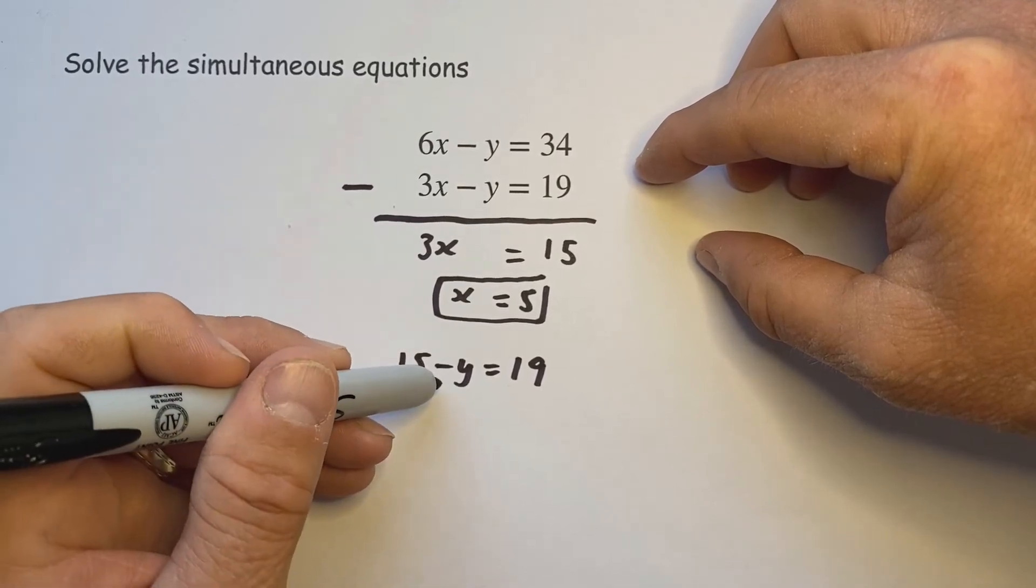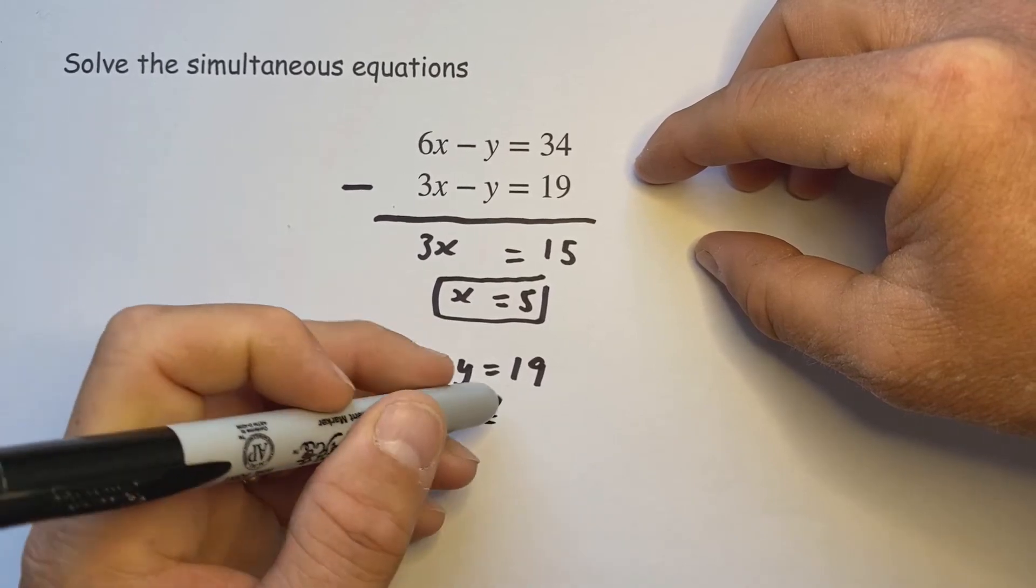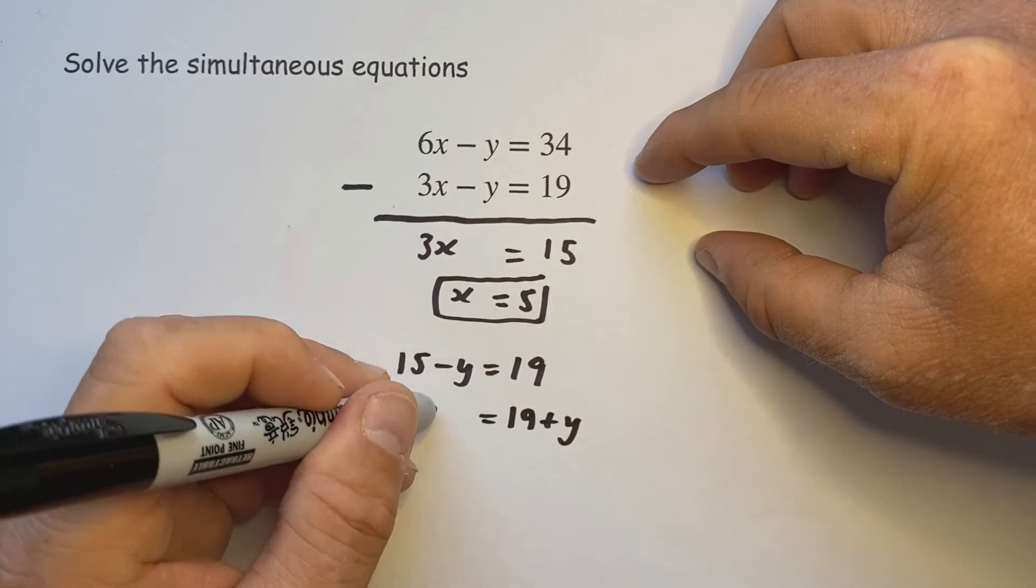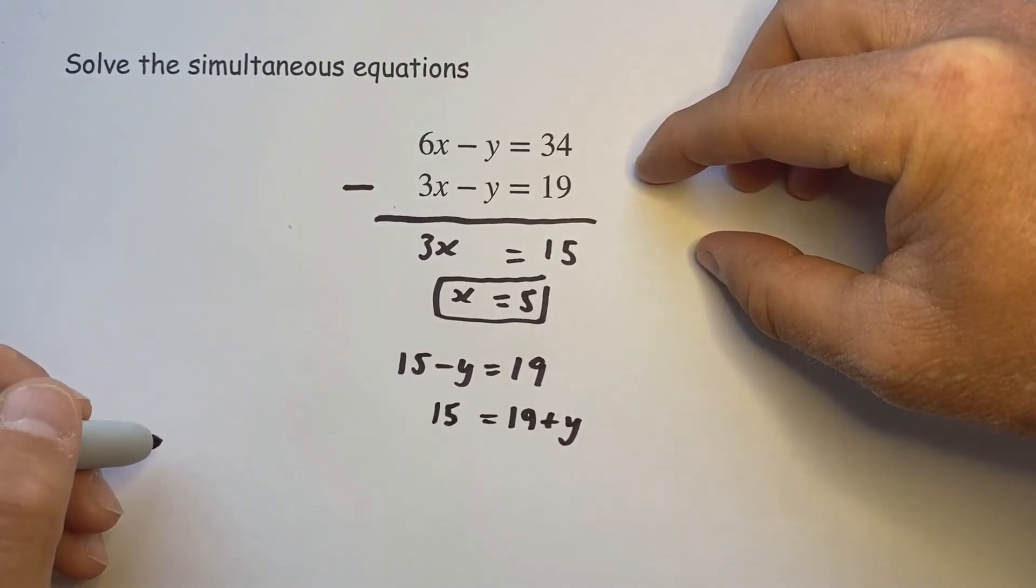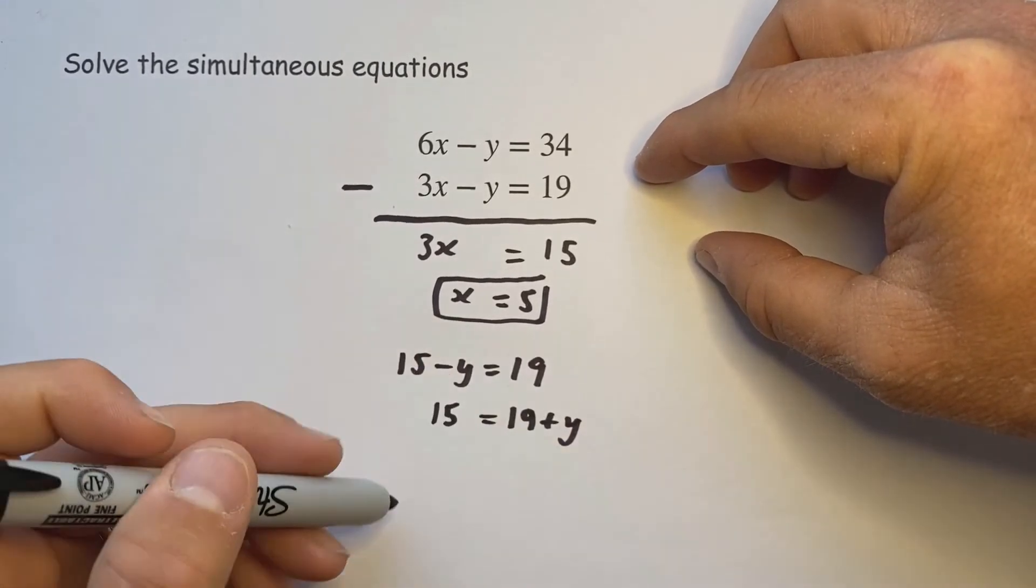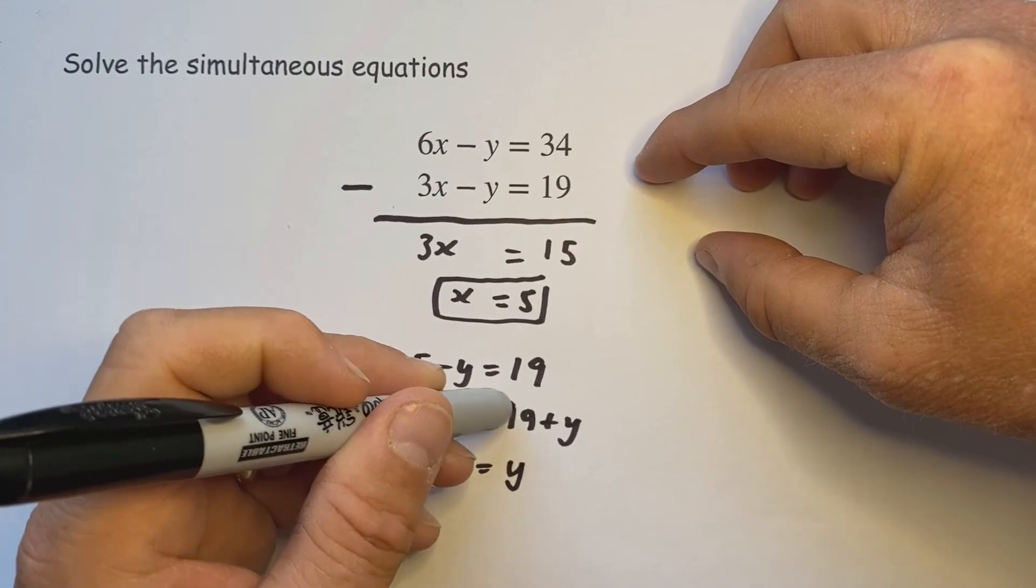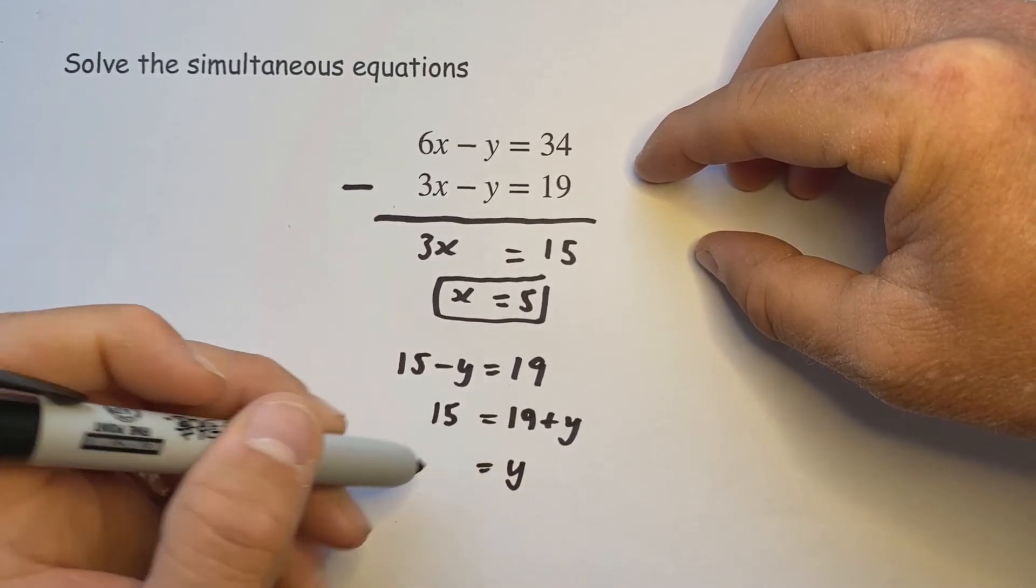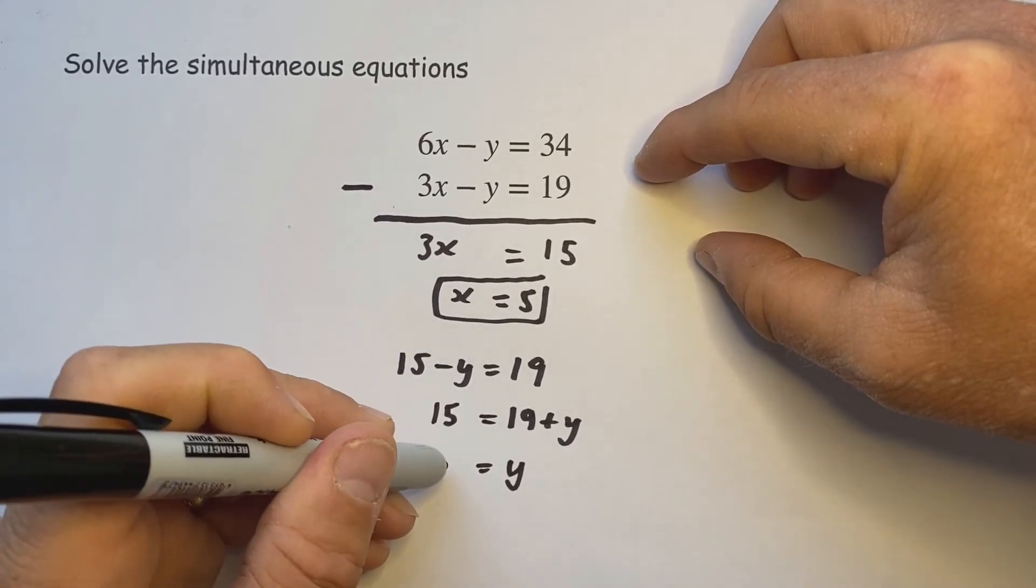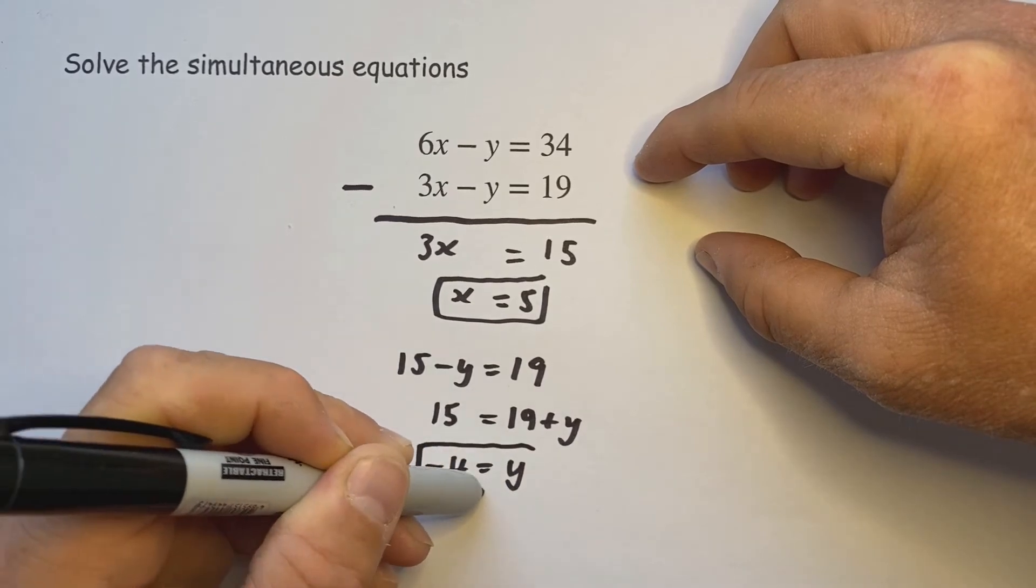I don't like solving equations with a minus letter, so what I always do is put the letter on the other side as a plus if that situation arises. So the minus one becomes plus one on that side. Now if I move the number across this side it becomes a take 19, and 15 take 19 is minus 4. So the letter y ends up being minus 4.